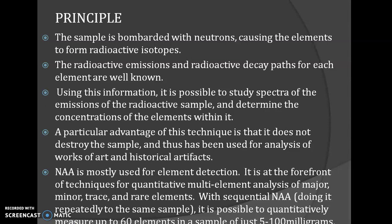With sequential NAA — that is, by repeating the same NAA analysis for the same sample — it is possible to quantitatively measure up to 60 elements in a sample with just about 5 to 100 milligrams of material. There do exist some disadvantages, because the substance becomes radioactive for a period of time, and you have to wait for the sample to become non-radioactive. Measures should be taken to preserve it while the radioactivity is still present.